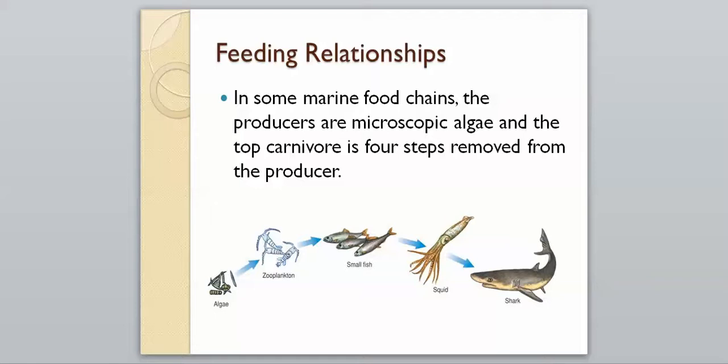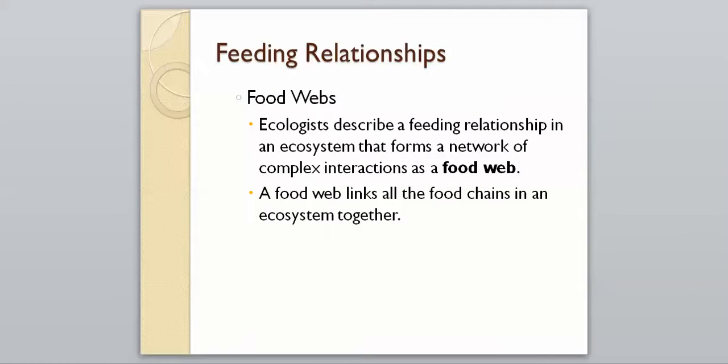However, things aren't always as simple as just a simple food chain, and then we have what are known as food webs. Ecologists describe a feeding relationship in an ecosystem that forms a network of complex interactions as a food web. A food web will link all the food chains in an ecosystem together. A web is a little more complex than a chain and will show all the possibilities of what can be eaten.